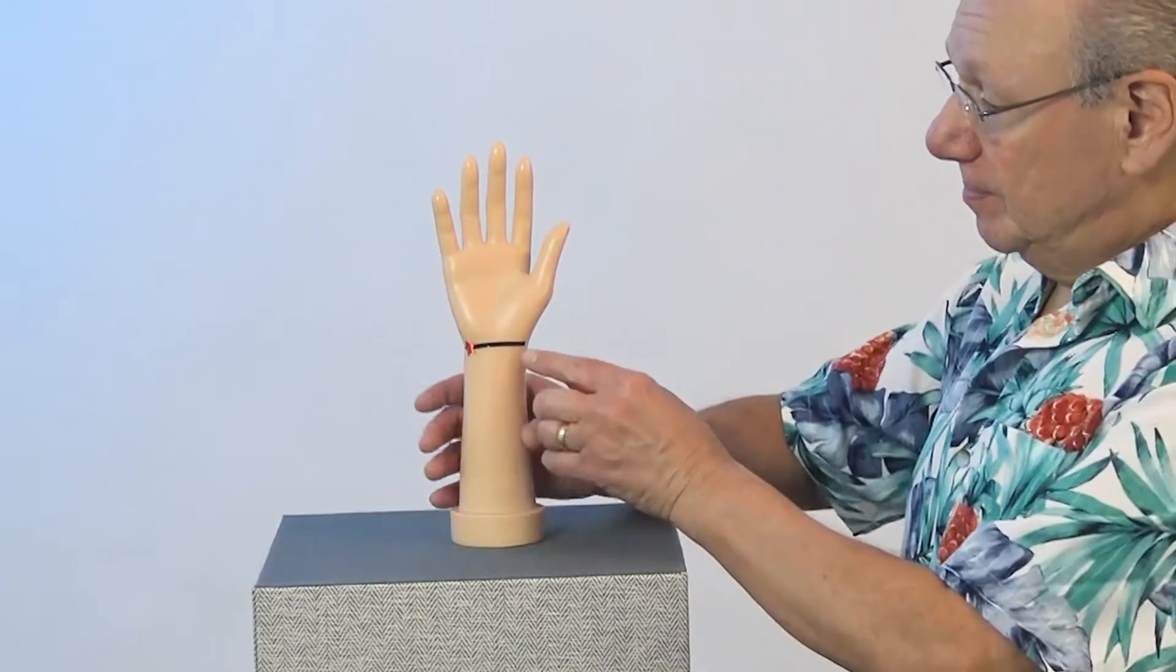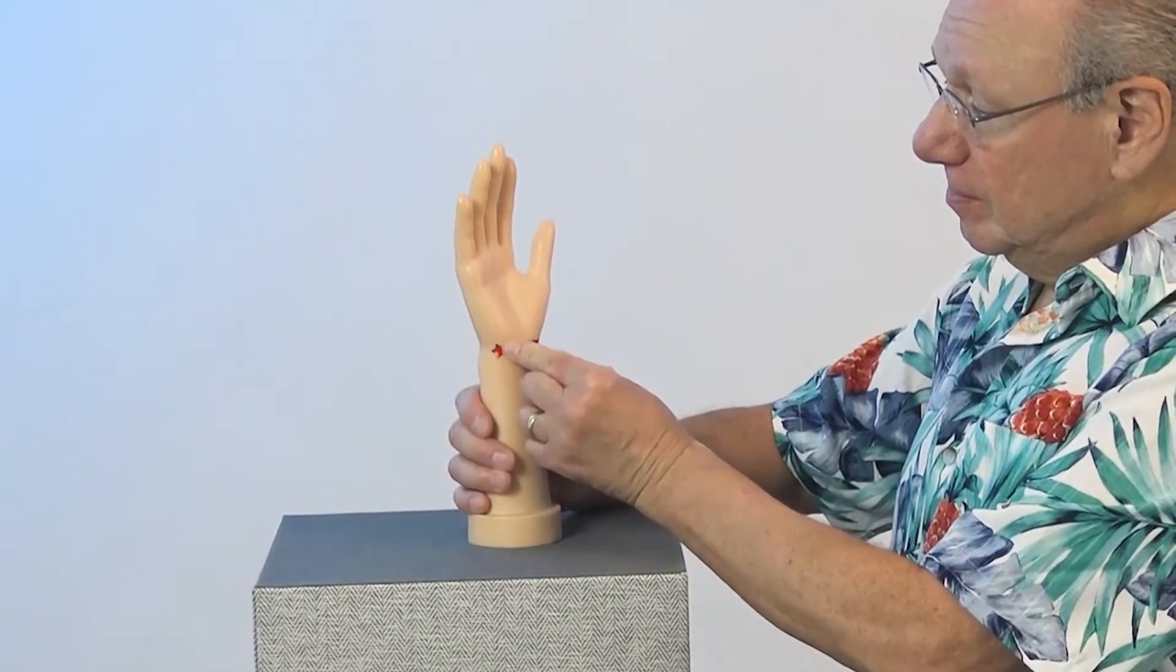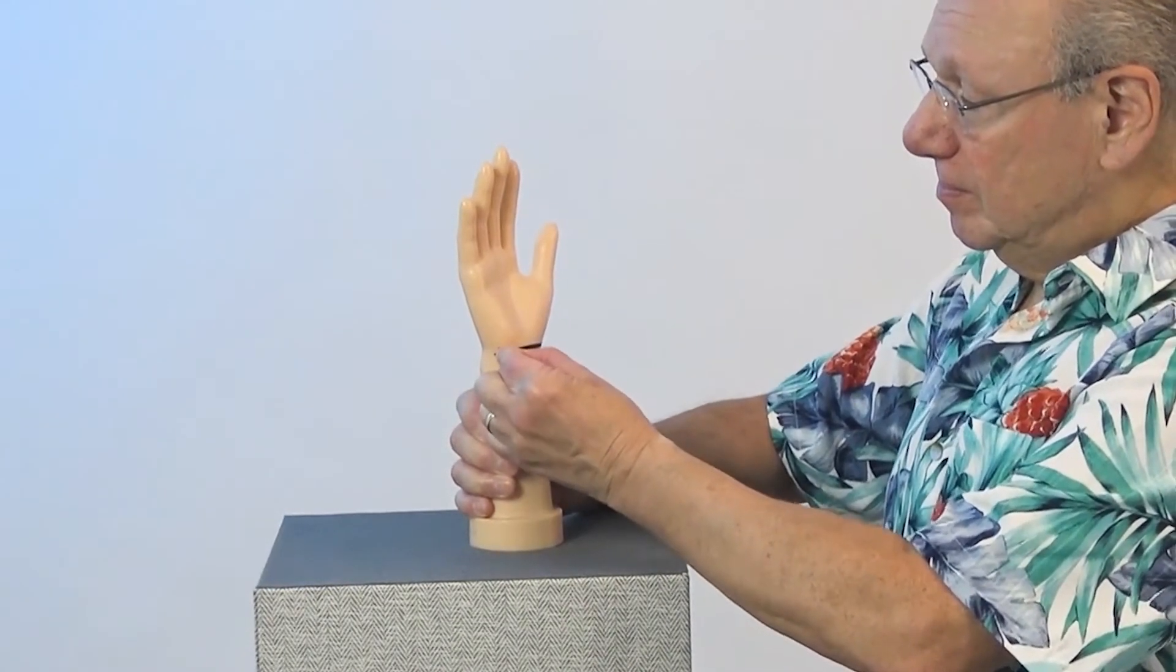Activate Heart 7 by gently rubbing this point five times. Take a break for a count of five and repeat four more times. Or if you have a Tei Shin, I suggest that you use the round end.